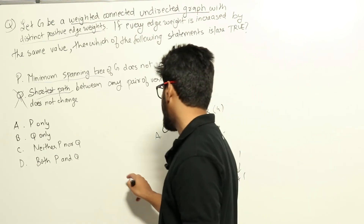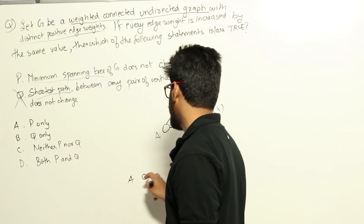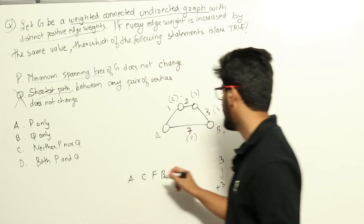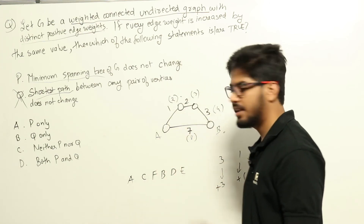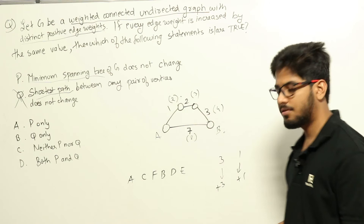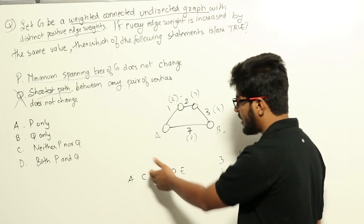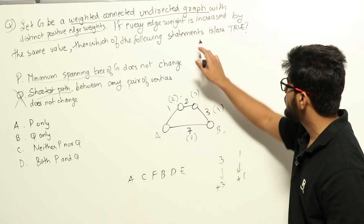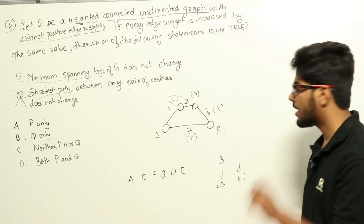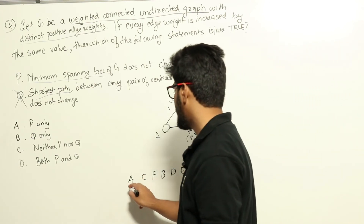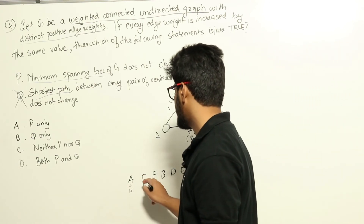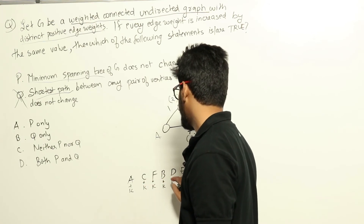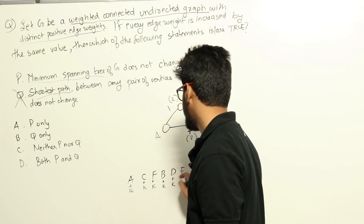Let's say the sorted order is A, C, F, B, D, and E. These are the edge weights after sorting. Now, if we are increasing all the weights by the same constant value K, then A becomes A+K, C becomes C+K, F becomes F+K, B becomes B+K, D becomes D+K, and E becomes E+K.